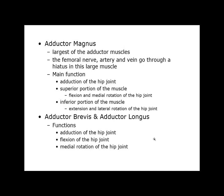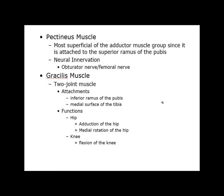The adductor brevis and adductor longus adduct the hip joint, they flex it, and they also medially rotate the hip. The pectineus is the most superficial of all the adductor muscle group because it sits on the superior ramus of the pubis. Its neural innervation — you can say obturator nerve, or some say femoral nerve — but for simplicity, all adductor muscles of the hip are innervated by the obturator nerve.